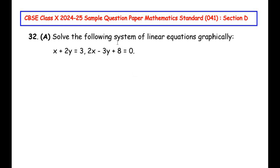This question is from the chapter 'Pair of Linear Equations in Two Variables'. The problem is to solve the following system of linear equations graphically: x + 2y = 3 and 2x - 3y + 8 = 0. We have to draw a graph for these two equations, which each represent a straight line, and find where the two lines intersect — that intersecting point gives us the solution.